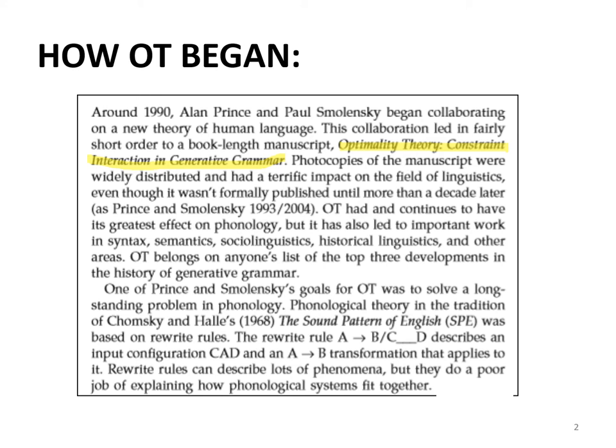The title of the manuscript by Prince and Smolensky was meticulously planned — it is not random. The entire philosophy of optimality theory is encoded in the title itself. Photocopies of the manuscript were widely distributed and had a terrific impact in the field of linguistics, even though it was not formally published until more than a decade later.